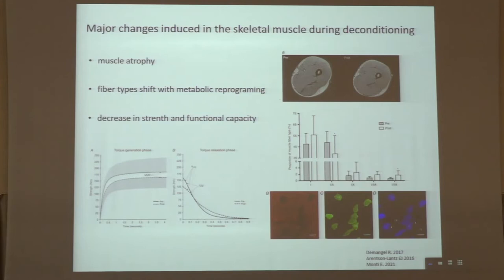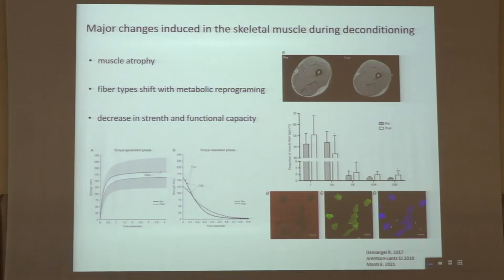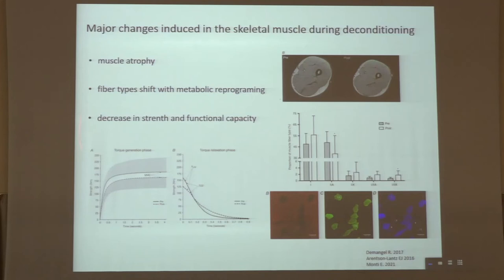In the literature, there are many data about the changes induced in skeletal muscle during deconditioning, either in humans or in different animal models. Major changes are skeletal muscle atrophy, demonstrated by a decrease in the cross-sectional area of the involved muscles, together with fiber type switching with metabolic reprogramming involving predominantly a shift toward type 1 fibers, and a decrease in strength and functional capacity that does not correlate with the decrease of the cross-sectional area.